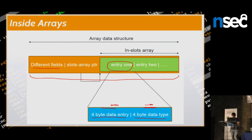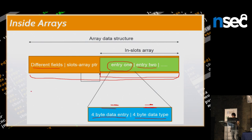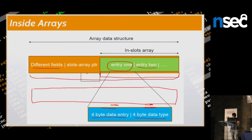The green slots array has a fixed size — for example, only ten elements. But in JavaScript you can store an arbitrary number of elements, so if you try to store more, it will reallocate the green array to a larger location and copy the data there. The slots array pointer gets updated to point to this new location. This relocation mechanism is exactly what I can abuse during my attack.